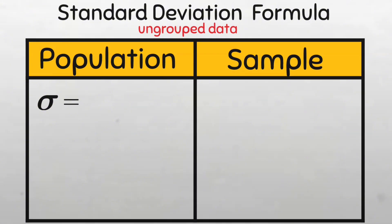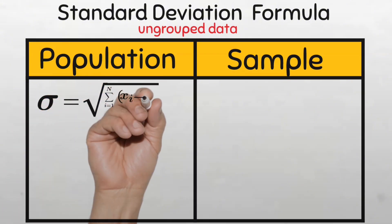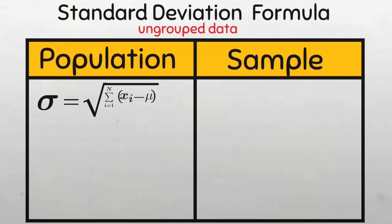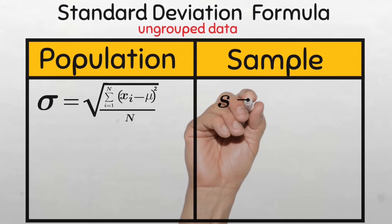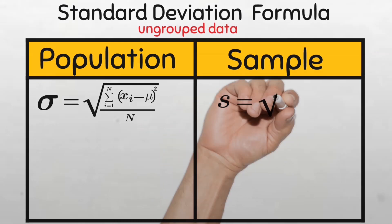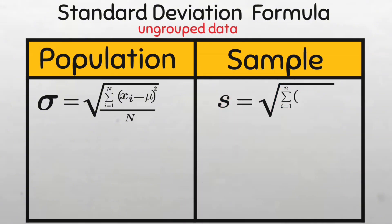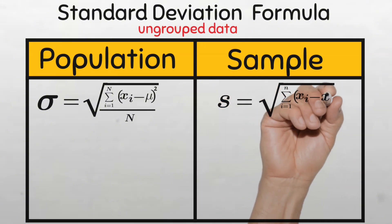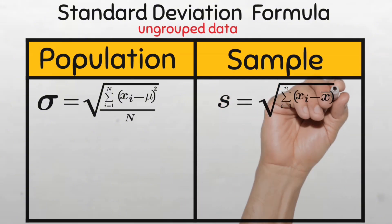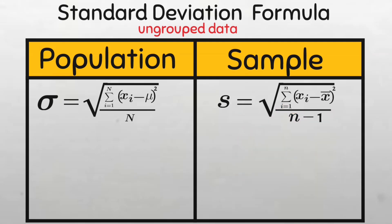The formula for standard deviation for ungroup data or individual series data of a population is given by sigma equals the square root of the summation of all squared deviations from the population mean of the first value to the nth value, all divided by N. While the formula for sample standard deviation for ungroup data is given by s equals the square root of the summation of the squared deviations from the sample mean from the first value to the nth value, divided by n minus 1.